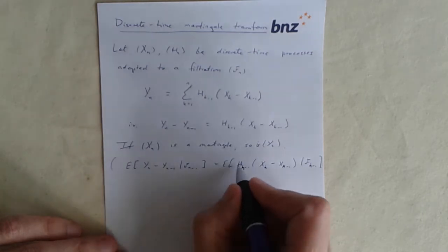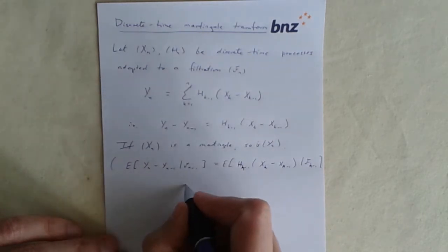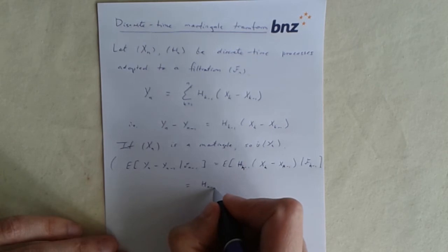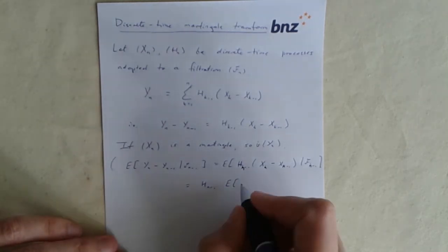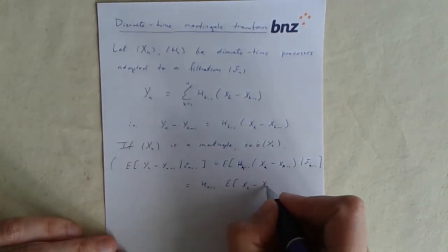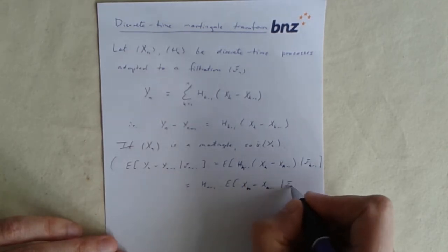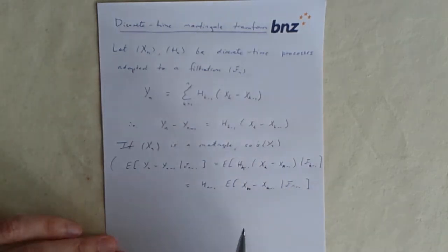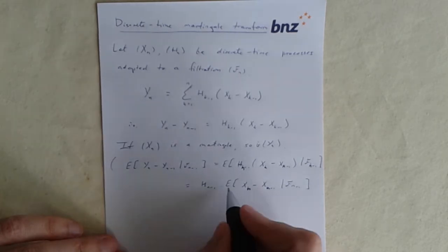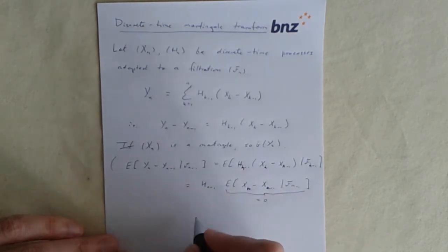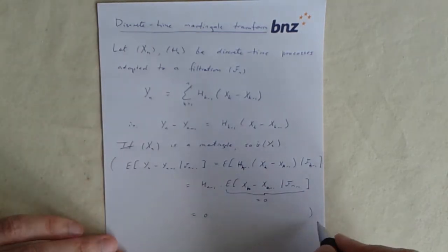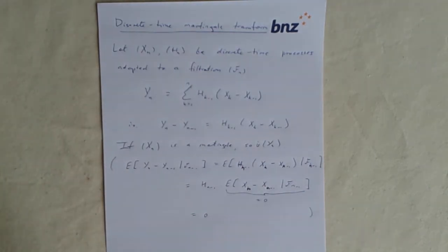That means that h k minus 1 is measurable with respect to f k minus 1. And so at time k minus 1, you know that... I don't know why I'm calling it k. These are all n's. At time n minus 1, you know in particular the values of x n minus 1 and h n minus 1. So the h n minus 1 that appears here can be treated as a constant, taken out of the expectation.